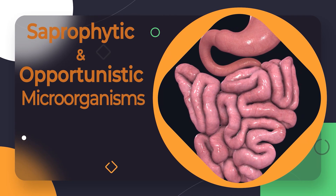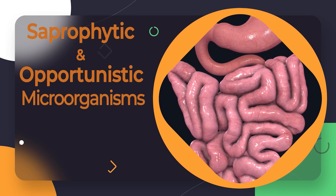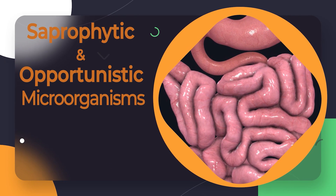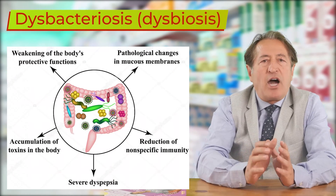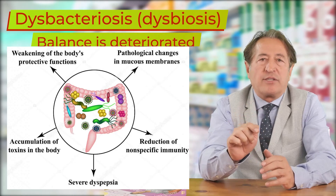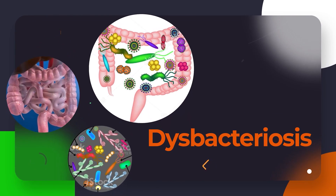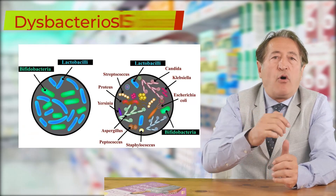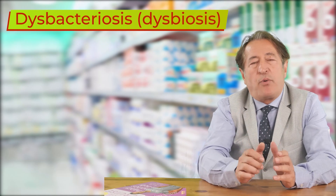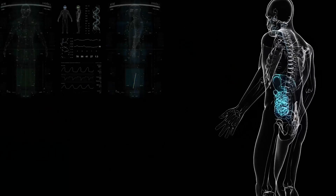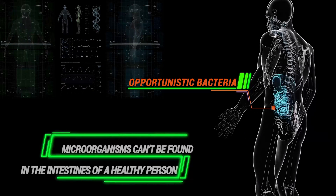In a healthy person, there is a certain balance between saprophytic and opportunistic microorganisms. How is this balance deteriorated? Dysbiosis occurs when this balance is deteriorated. But this is not a diagnosis or disease. Dysbiosis is a condition in which there are fewer friendly bacteria and more opportunistic bacteria, and they can develop disease-causing properties, or such microorganisms cannot be found in the intestines of a healthy person.